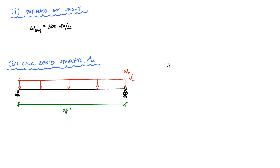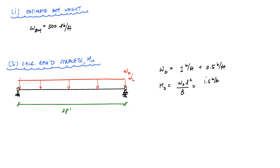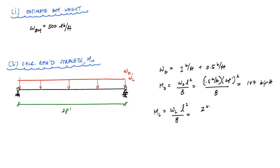For this problem, we're going to guess the beam weighs 500 pounds per foot. The distributed dead load WD is 1 kip per foot as given, plus the beam weight of 0.5 kip per foot. So the dead load moment MD equals WD·L²/8, which is 1.5 kip/ft × (28 ft)² / 8 = 147 kip-ft. The live load moment ML = WL·L²/8, with WL = 2 kip/ft, giving 196 kip-ft.